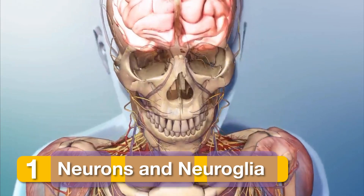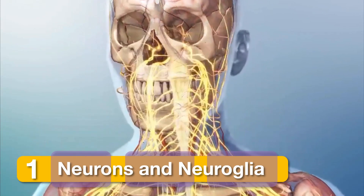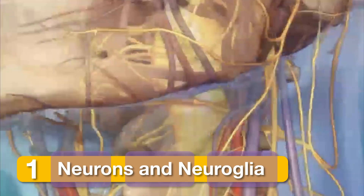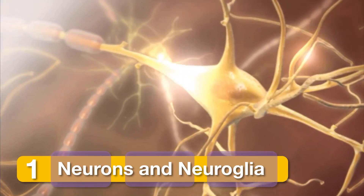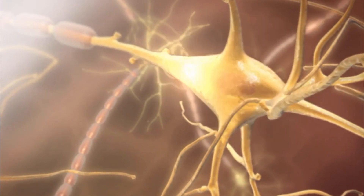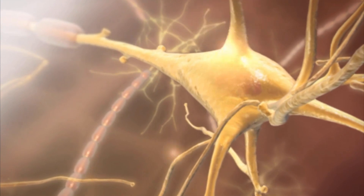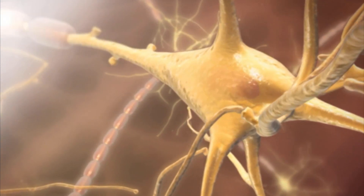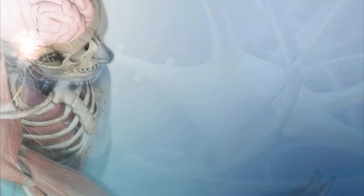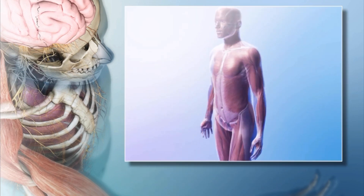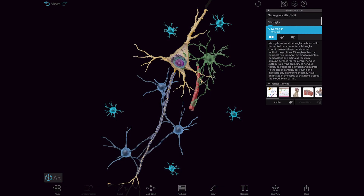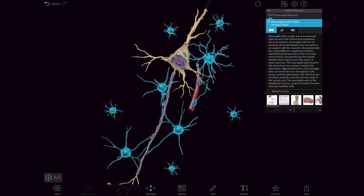Structures of the nervous system — brain, spinal cord, peripheral nerves, and ganglia — are formed from nervous tissue. At the cellular level, this tissue consists of neurons and neuroglia. Neurons are the message carriers which transmit sensory signals and motor commands, while neuroglia support the neurons and other structures that supply and surround nervous tissue.